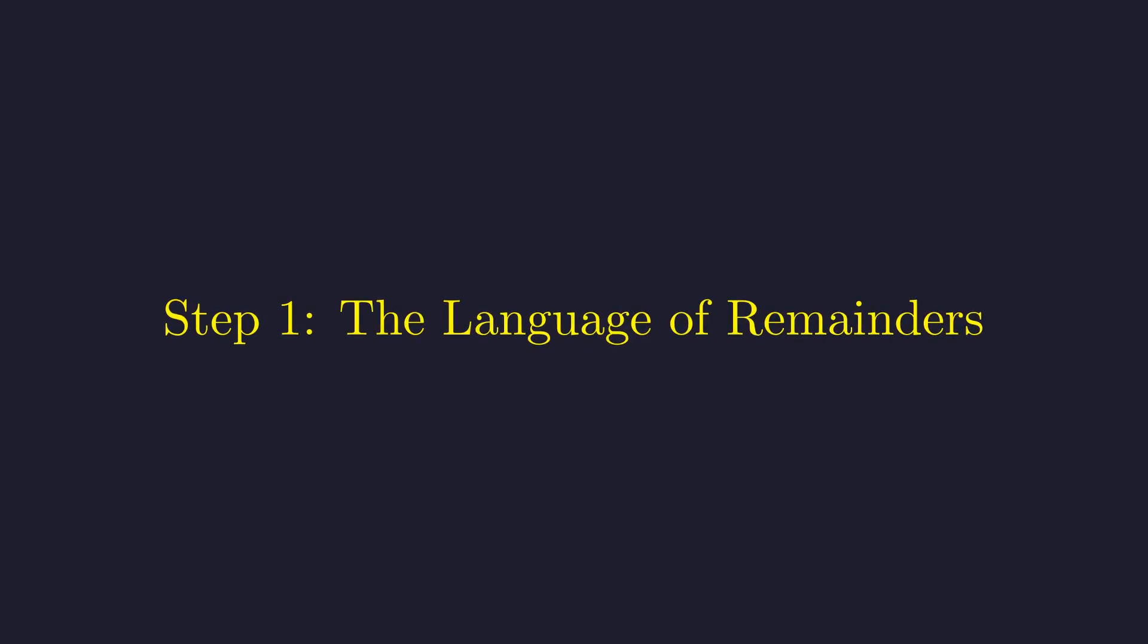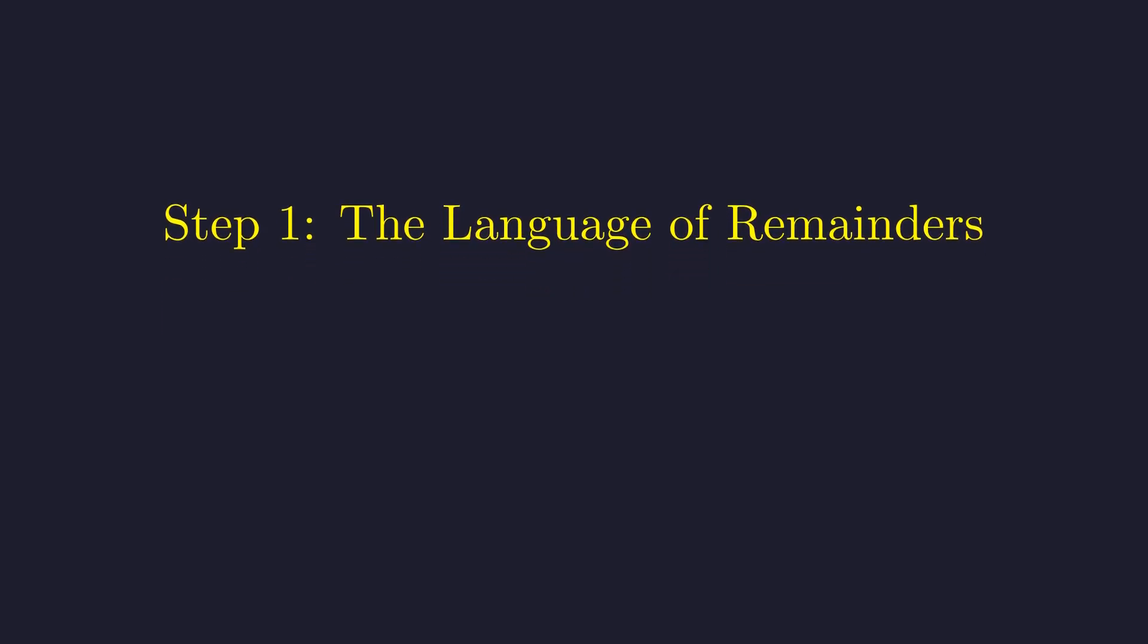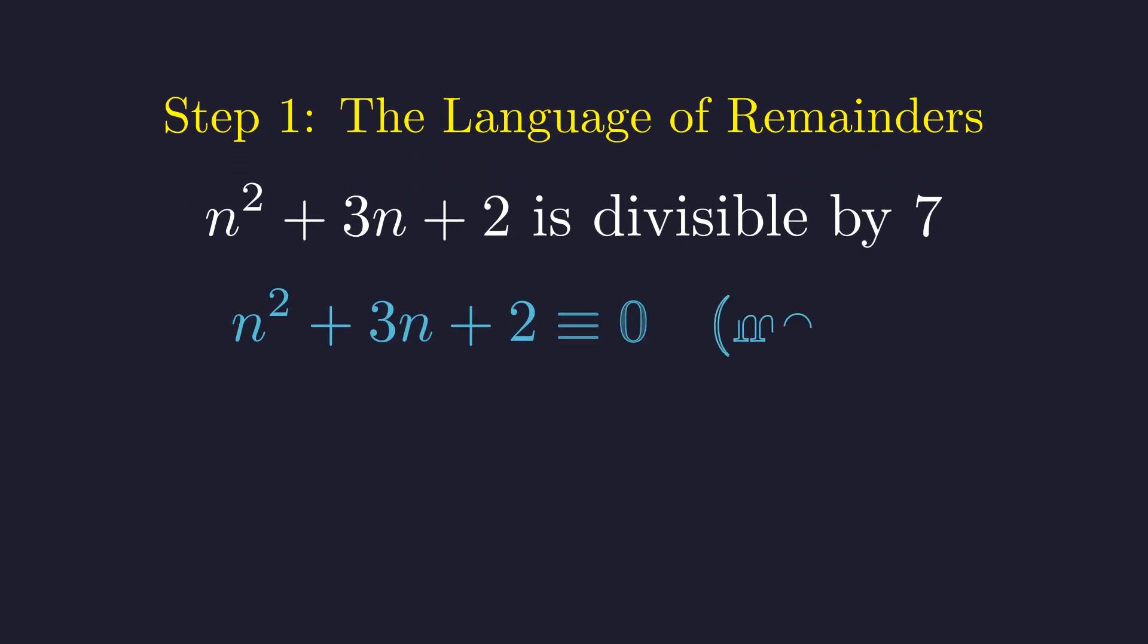The language of divisibility is best expressed through modular arithmetic. The condition 'divisible by 7' means that the expression leaves a remainder of 0 when divided by 7. Mathematically, we write this as a congruence.